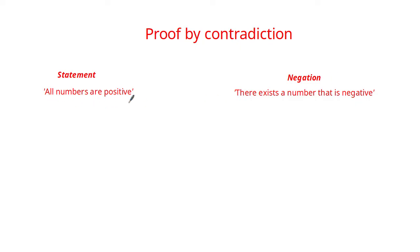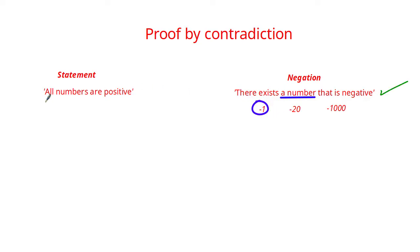The original statement was that all numbers are positive, and the negation is that there exists a number that is negative. We know of course that there exist many negative numbers — minus 1, minus 20, minus a thousand and so on — but by just finding one instance of a negative number we've used the negation to disprove the original statement really quickly.